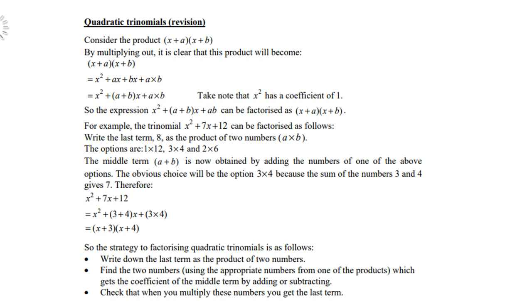So the strategy to factorize quadratic trinomials is as follows. Number 1: Write down the last term as the product of two numbers. Find the two numbers using the appropriate numbers from one of the products, which gets the coefficient of the middle term by adding or subtracting. Check that when you multiply these numbers, you get the last term.